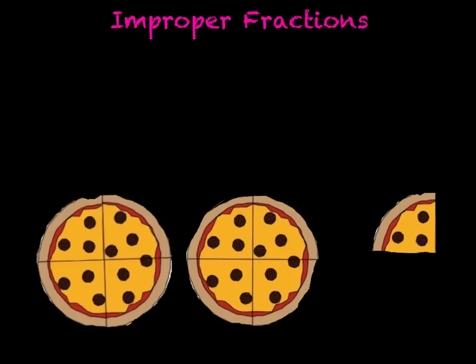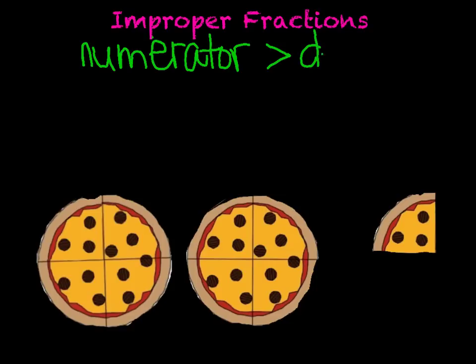Let's move on to improper fractions. Improper fractions are fractions that are greater than or equal to one, but they also have a numerator that is larger than the denominator. Numerator greater than denominator. So how can this be?